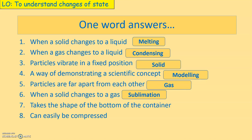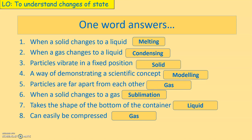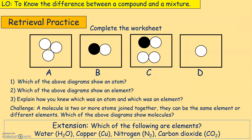We call that sublimation. Solid changing to gas straight away is called sublimation. If you didn't know that, write it down with your green pen. Number seven: this takes the shape of the bottom of the container — the answer is liquid. Number eight: can easily be compressed — the answer is gas. Gas can easily be compressed. Mark everything and give yourself a total mark.